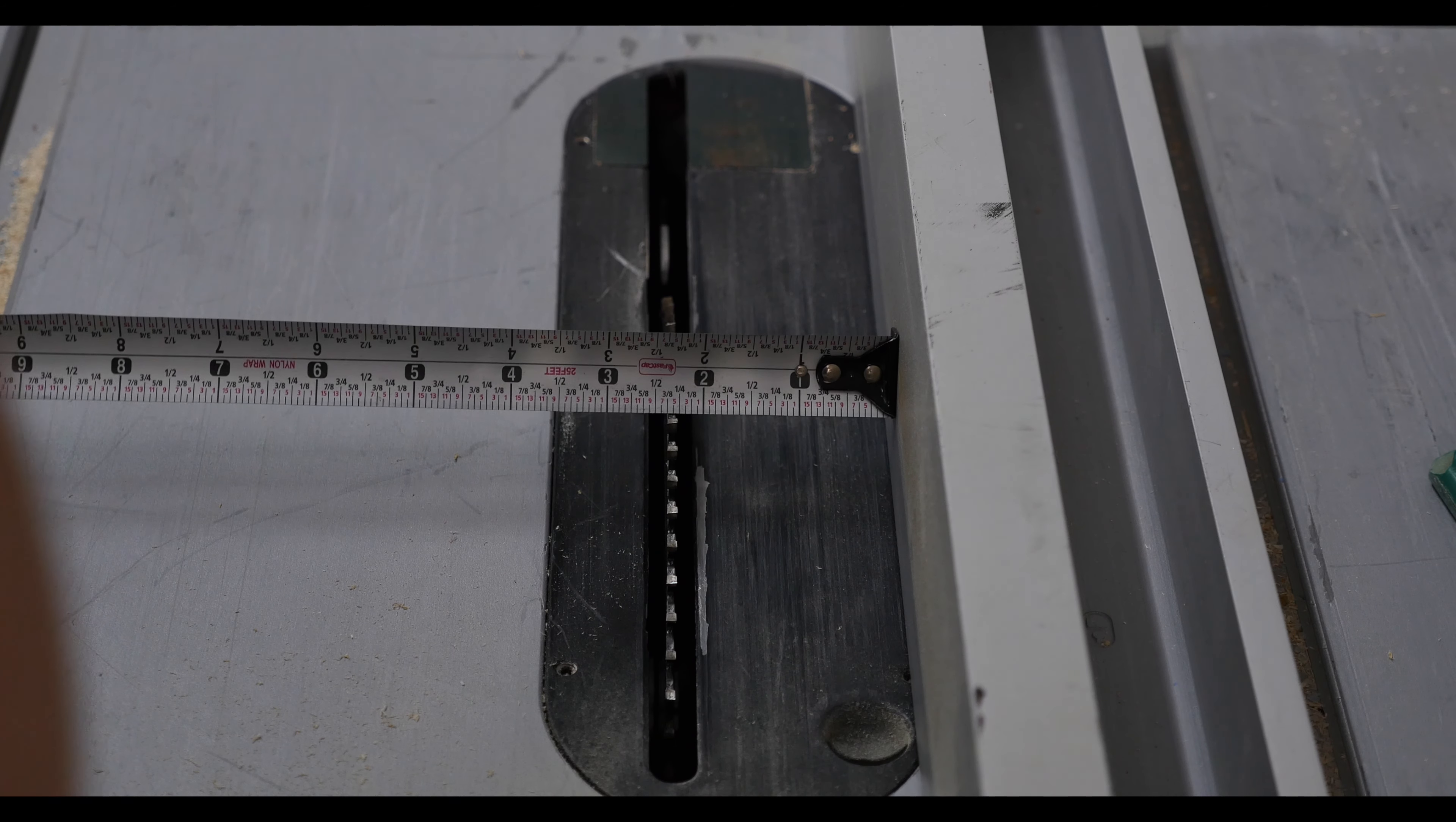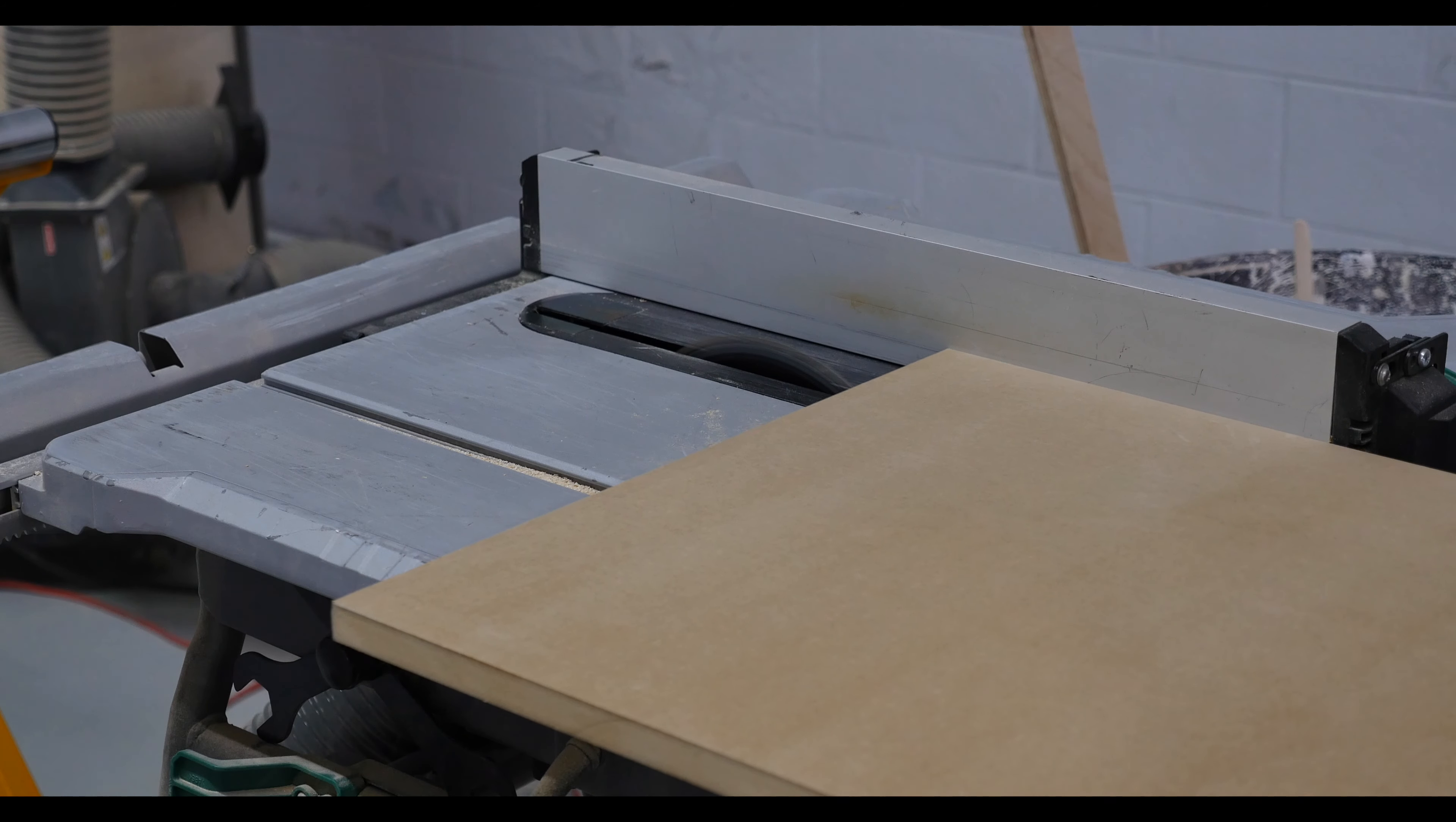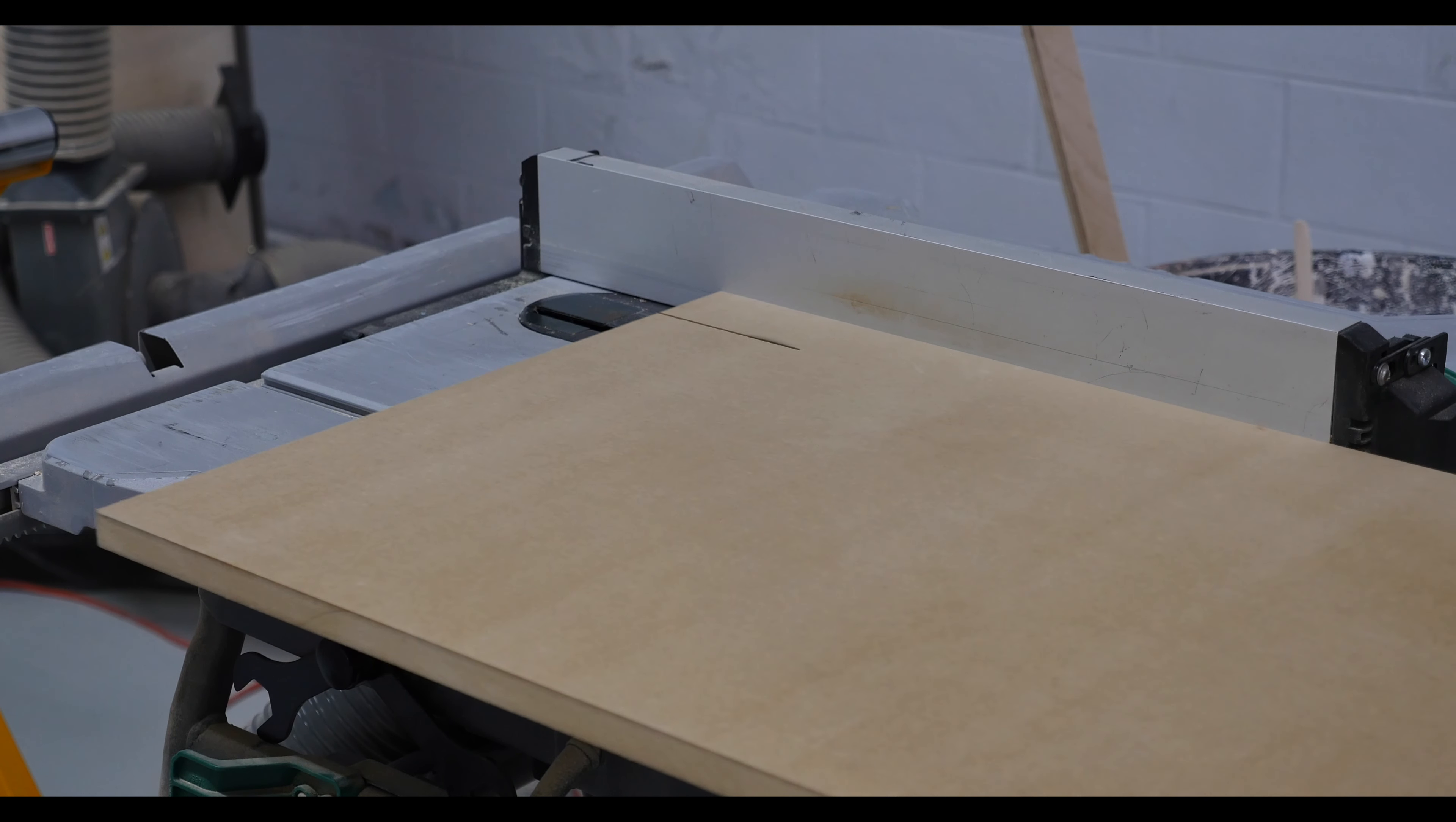Alright, so after we have our material list, we can go to our table saw, set it to two and a quarter to the guard, and start ripping out our rail and style material.